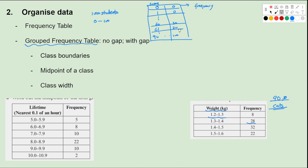We can do the same for discrete data. For student marks, we can group as 0 to 10, 10 to 20, 20 to 30, continuing up to 90 to 100, with the frequency column showing how many students fall in each score range.